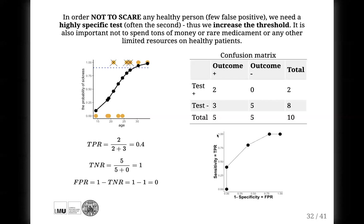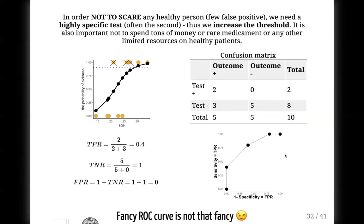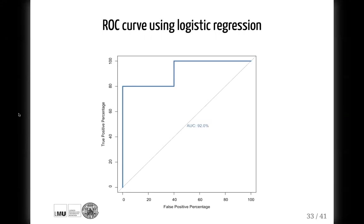You don't have to understand what the name 'receiver operating characteristics' means. Now you know how the ROC curve is created from the really basic idea of looking at data, making a model, making predictions, changing the thresholds, and evaluating these predictions for every possible threshold, then summarizing all possible thresholds in one plot.